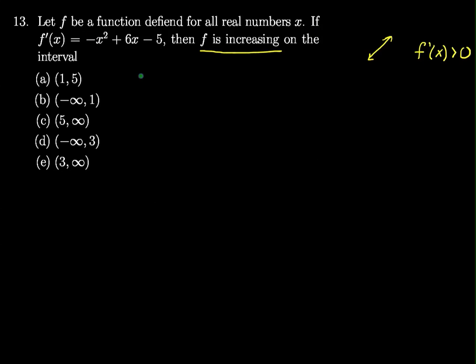So we'll start by factoring. We know that f'(x) is equal to, and I'll take out a negative sign. I don't like factoring things if they have a negative on the leading coefficient, so I'll just factor out a negative, and that will give me a positive x² - 6x + 5.